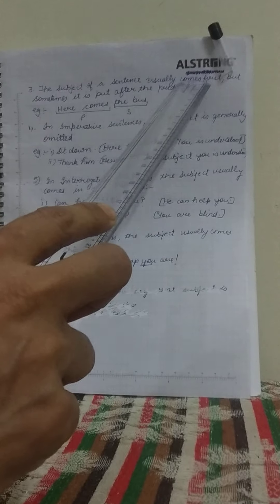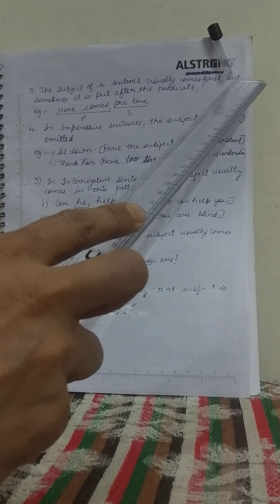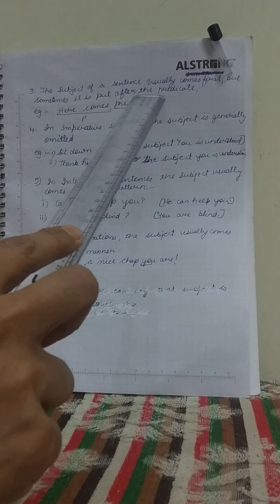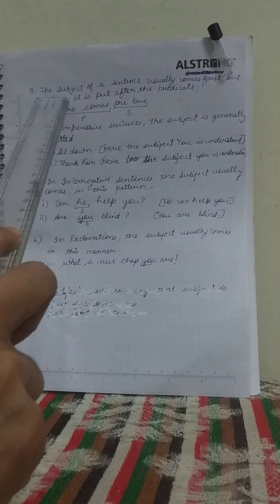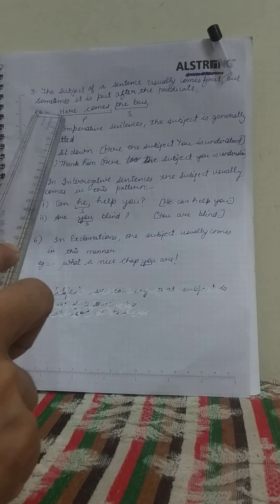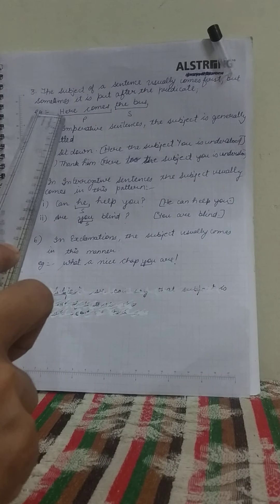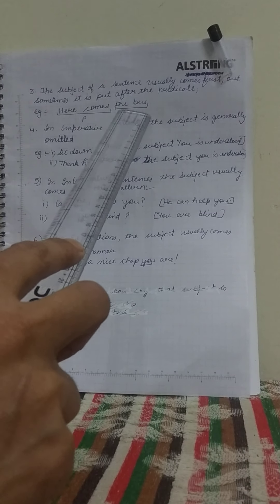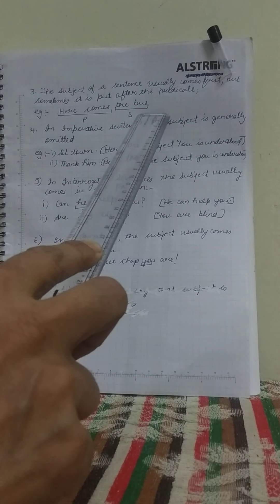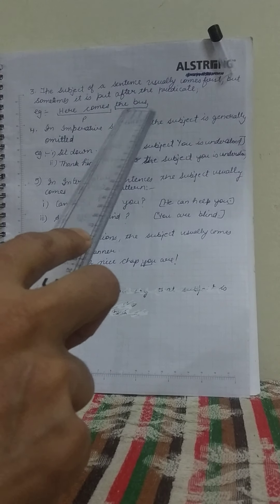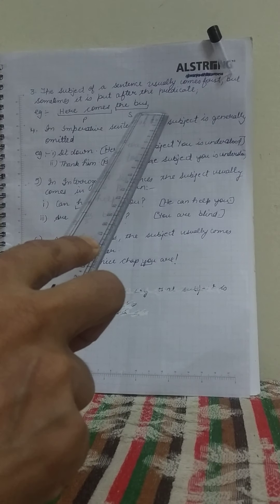Third point: the subject of a sentence usually comes first, but sometimes it is put after the predicate. For example, 'here comes the bus' — here 'the bus' is the subject and it is at the end of the sentence. So the subject can be at the end as well.